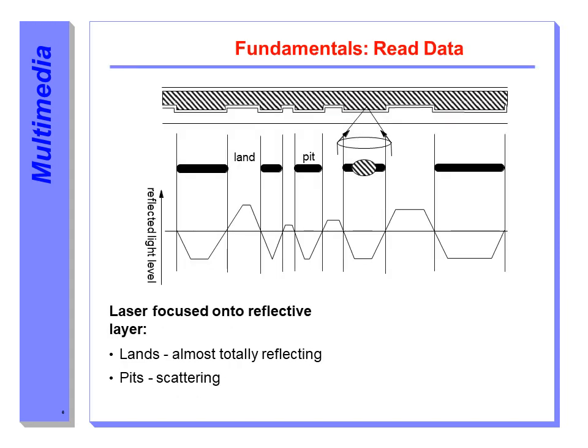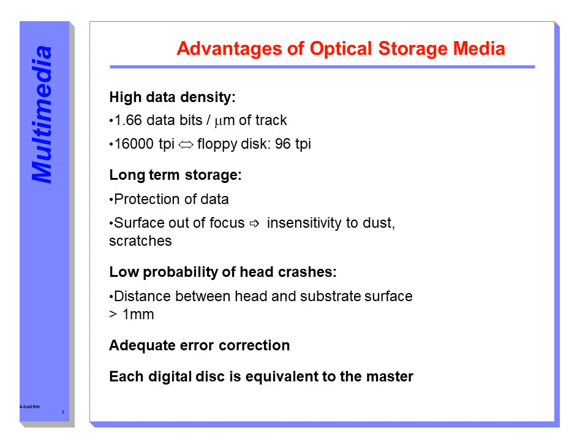Lands almost totally reflect the laser and pits scatter it, giving high data density of 1.66 data bits per micrometer — 16,000 tracks per inch. This also provides long-term storage protection: the disc is made of rigid plastic, so even if dust settles on the surface it can be cleaned and the disc remains usable. The substrate layer is strong and protective, resulting in very few crashes.